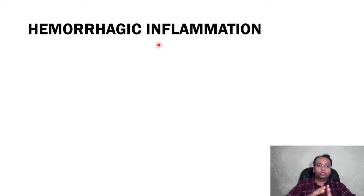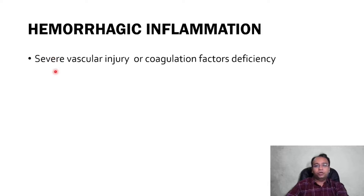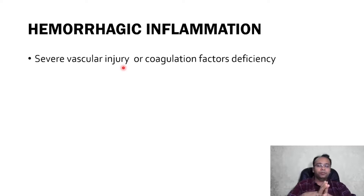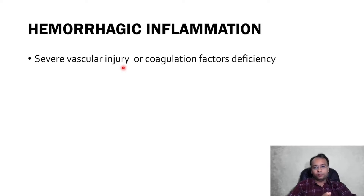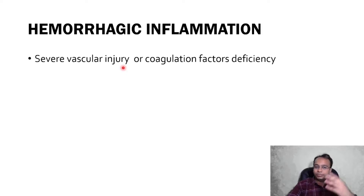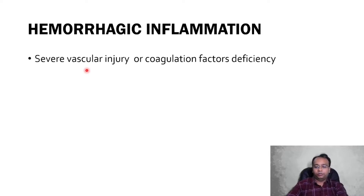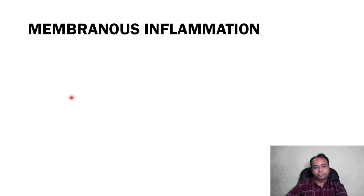Hemorrhagic inflammation is another morphological type. The name hemorrhagic is given because here there will be hemorrhage along with acute inflammation. It is because of severe vascular injury or coagulation factor deficiency. If the coagulation system is not working properly, bleeding will not stop — that can be the cause of hemorrhage. Obviously if blood vessel damage is there, blood will leak out. It is commonly seen in case of acute pancreatitis.